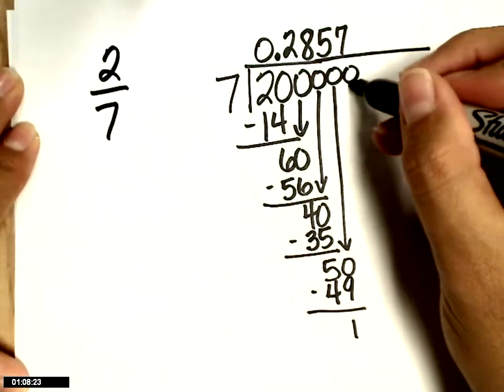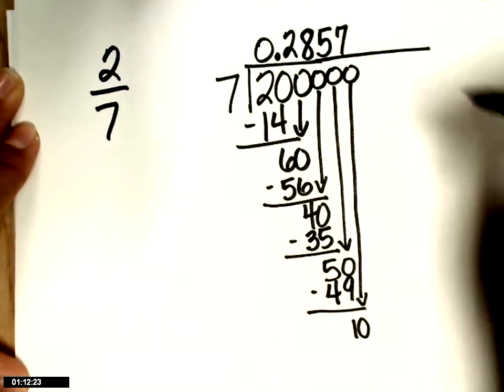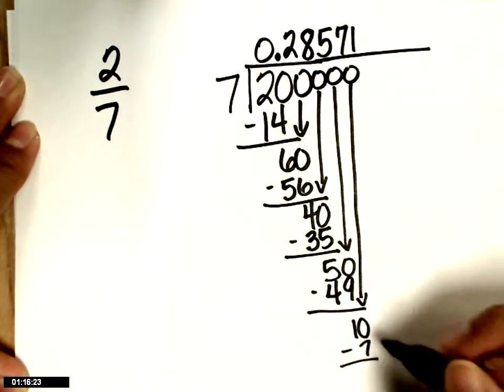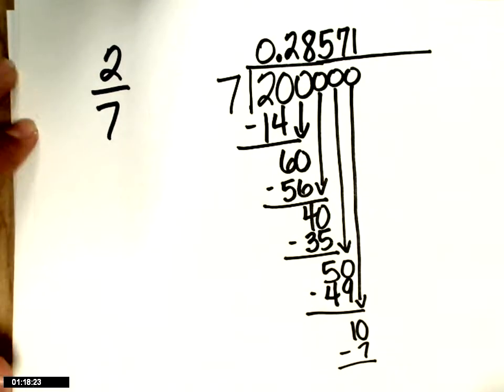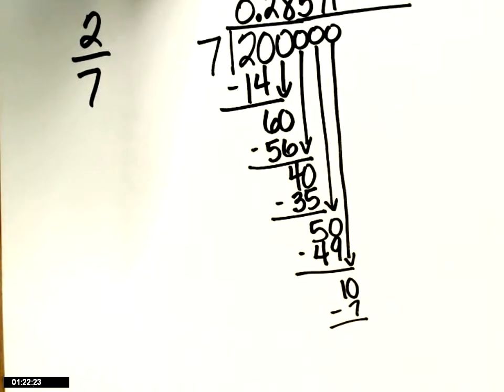Add another 0. Bring it down. 7 into 10? 1 time. 10 minus 7. Subtract. Let's see if I run out of room. It's 3.